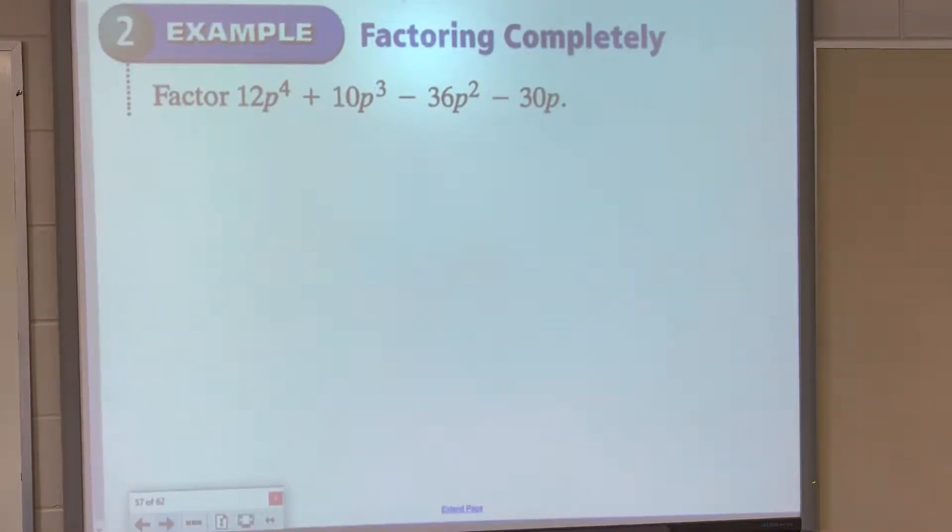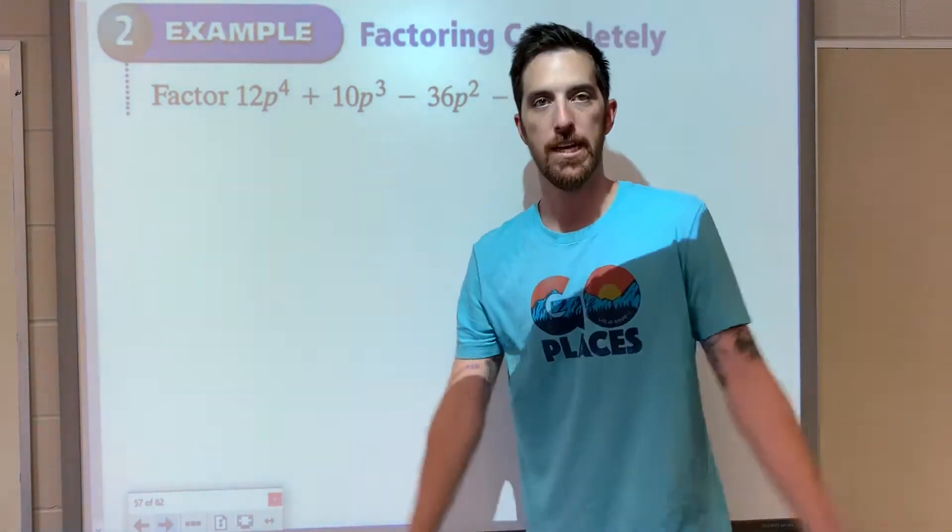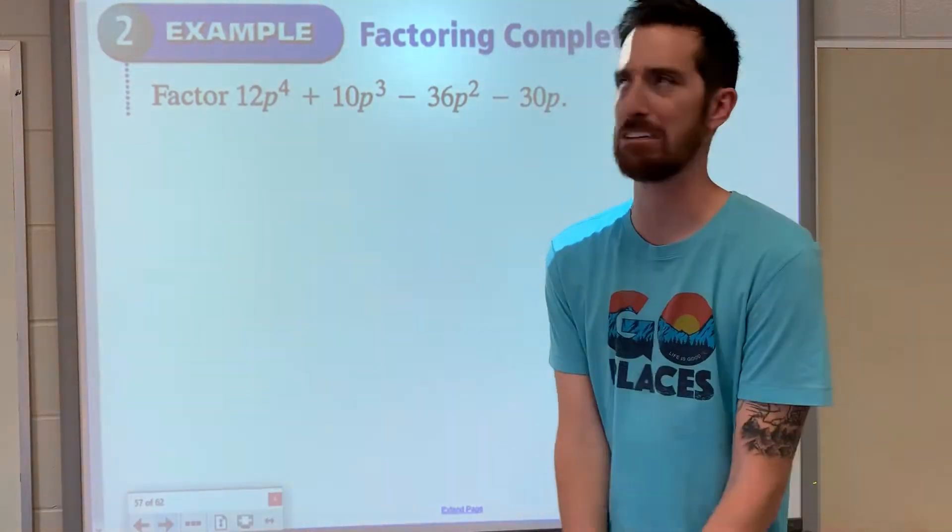Factor 12p to the 4th plus 10p to the 3rd minus 36p squared minus 30p. Always look for a greatest common factor.